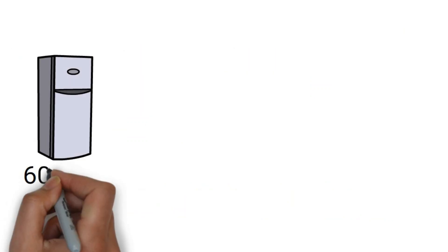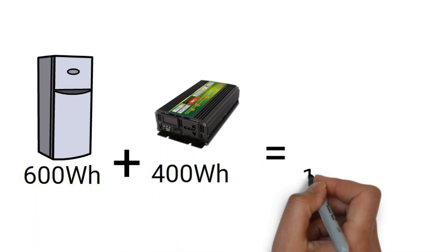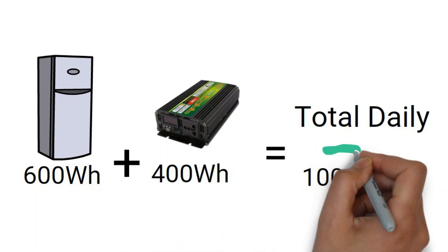Let's say your fridge uses around 600 watt-hours per day. Now, add your inverter. It consumes another 400 watt-hours. That makes a total of 1,000 watt-hours of daily energy consumption.